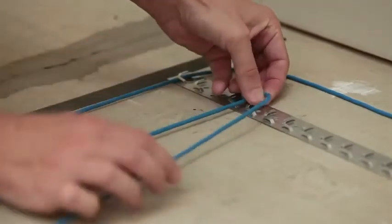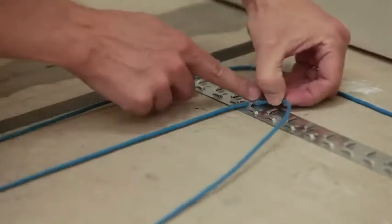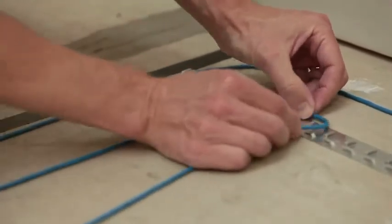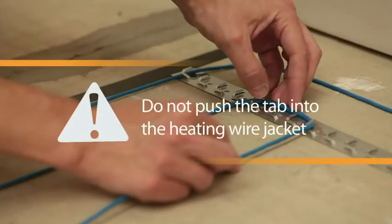Place the wire under the first tab. Bend each tab to secure the heating wire in place by hand. Do not use a hammer. Be careful not to push the tab into the heating wire jacket. Doing so may damage the wire.